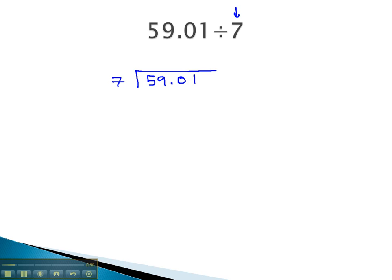Then, we can start dividing like always with long division, ignoring the decimal. 7 goes into 59 eight times, because 8 times 7 is 56. When we subtract, we get 3, bring down the 0.